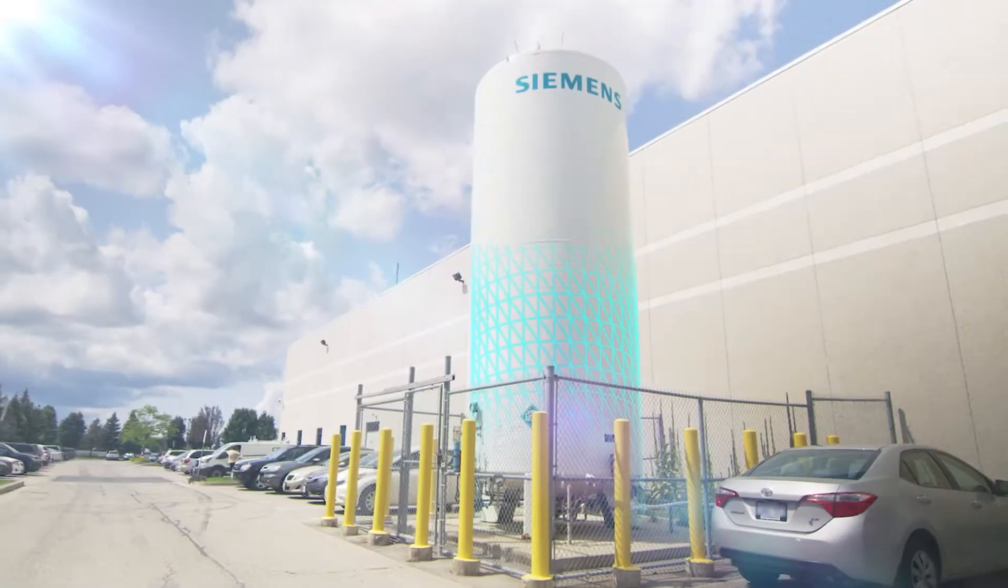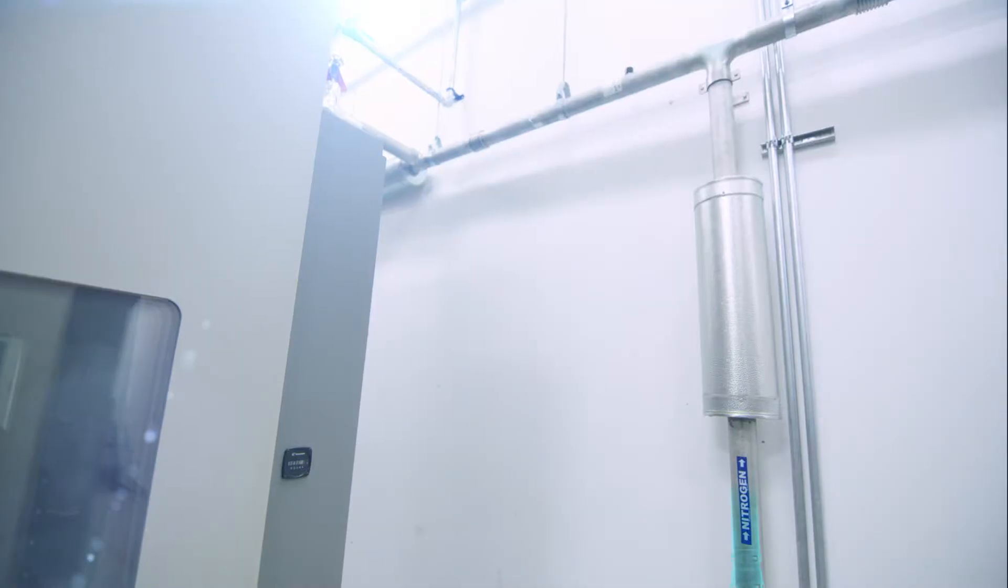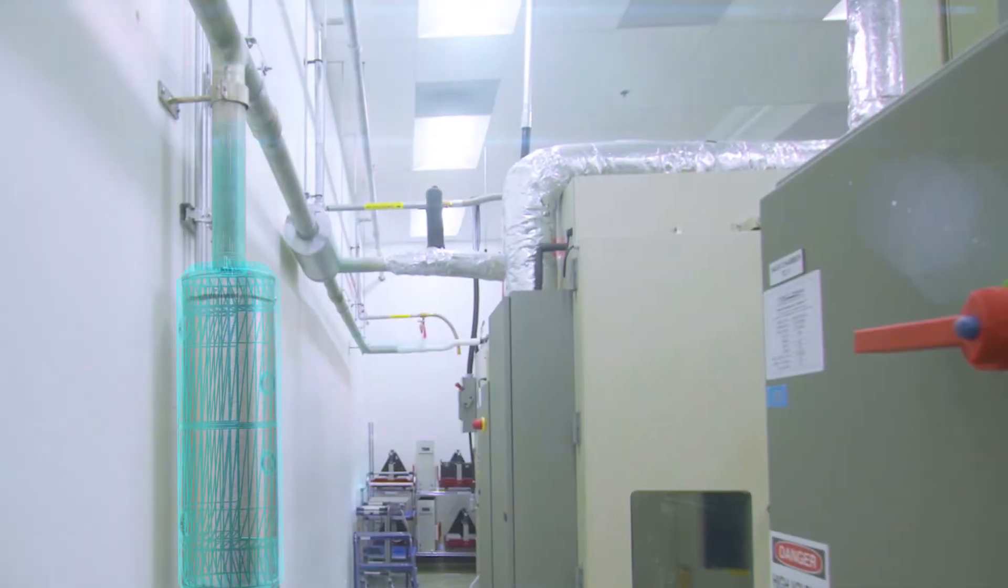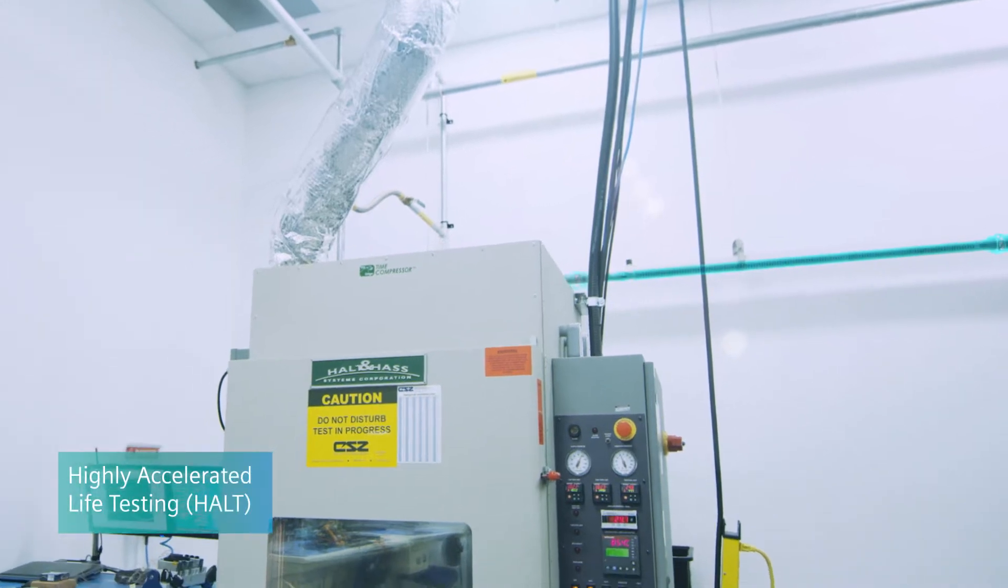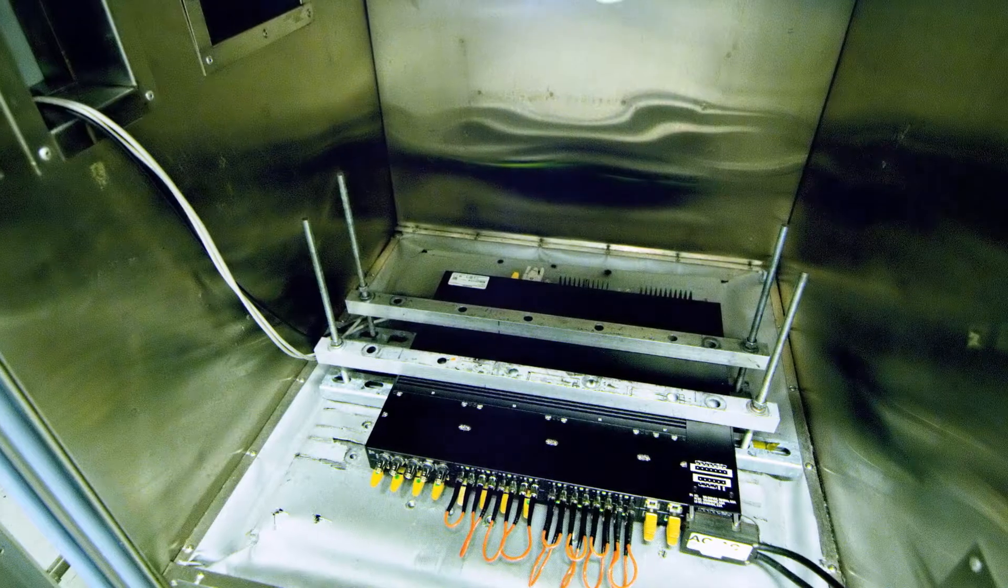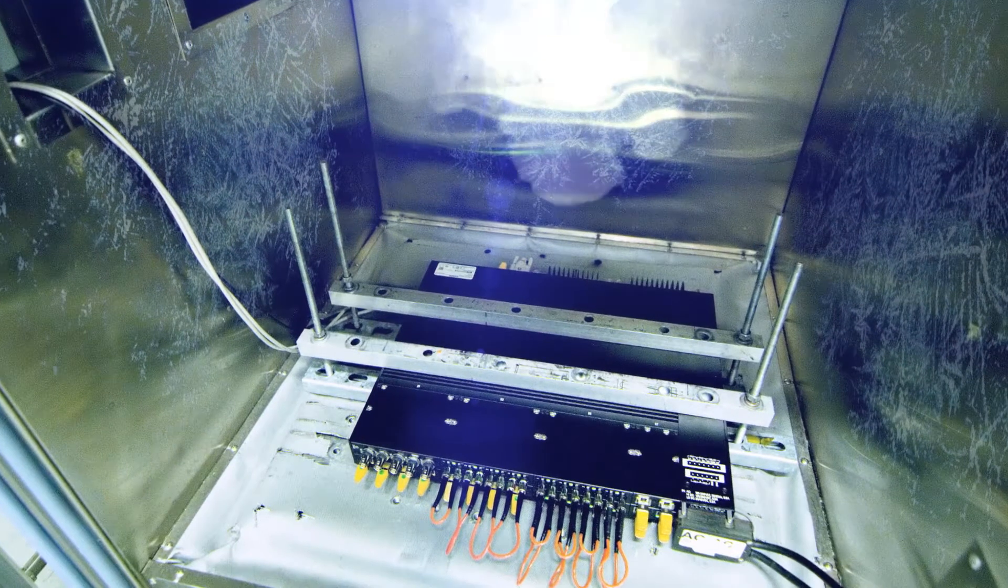These environmental stress tests are designed to identify product design flaws and manufacturing errors. Highly accelerated life testing (HALT) is conducted during the product design phase to ensure that any design issues are identified and resolved prior to the product being put into production.